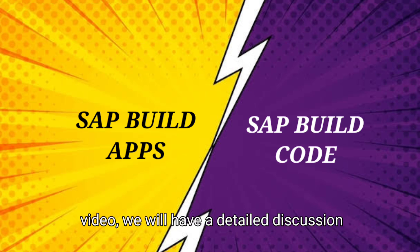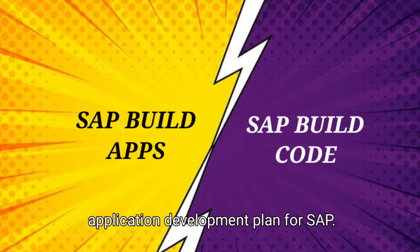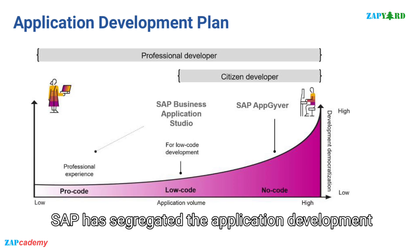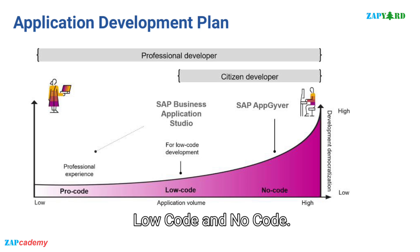In this video, we will have a detailed discussion on SAP Build Code, its features, and the application development plan for SAP. SAP has segregated the application development plan into three broad categories: Pro Code, Low Code, and No Code.